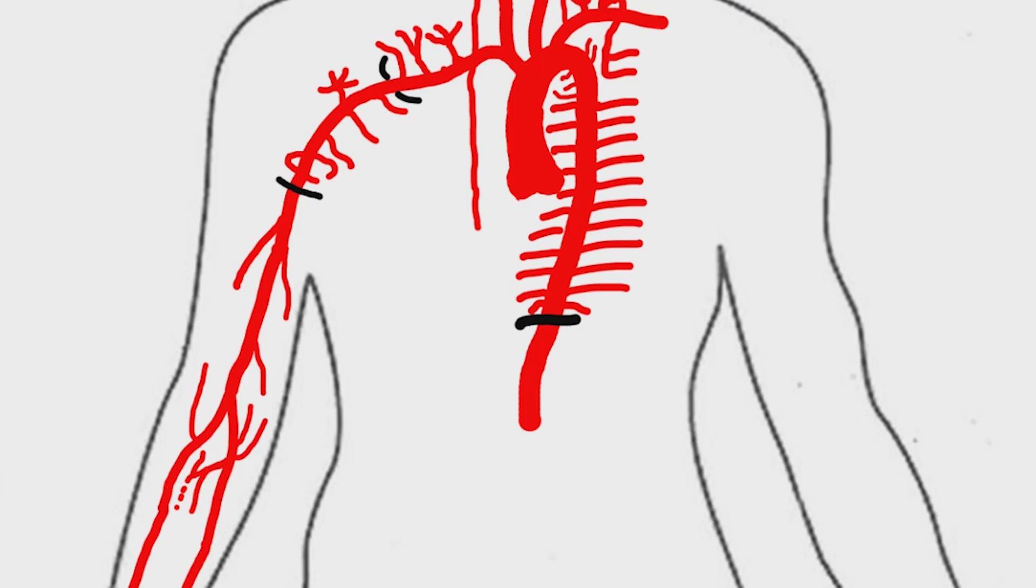Let's see the abdominal aortic branches. Abdominal aorta is continuation of descending thoracic aorta from the aortic hiatus. It extends till the bifurcation into common iliac arteries.